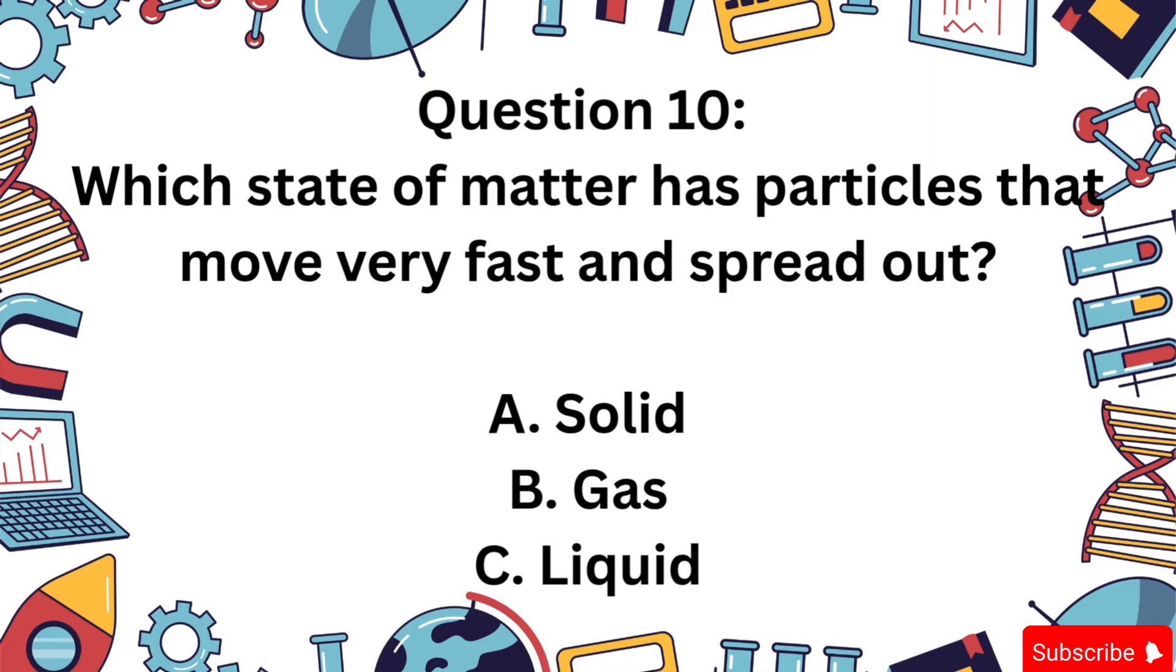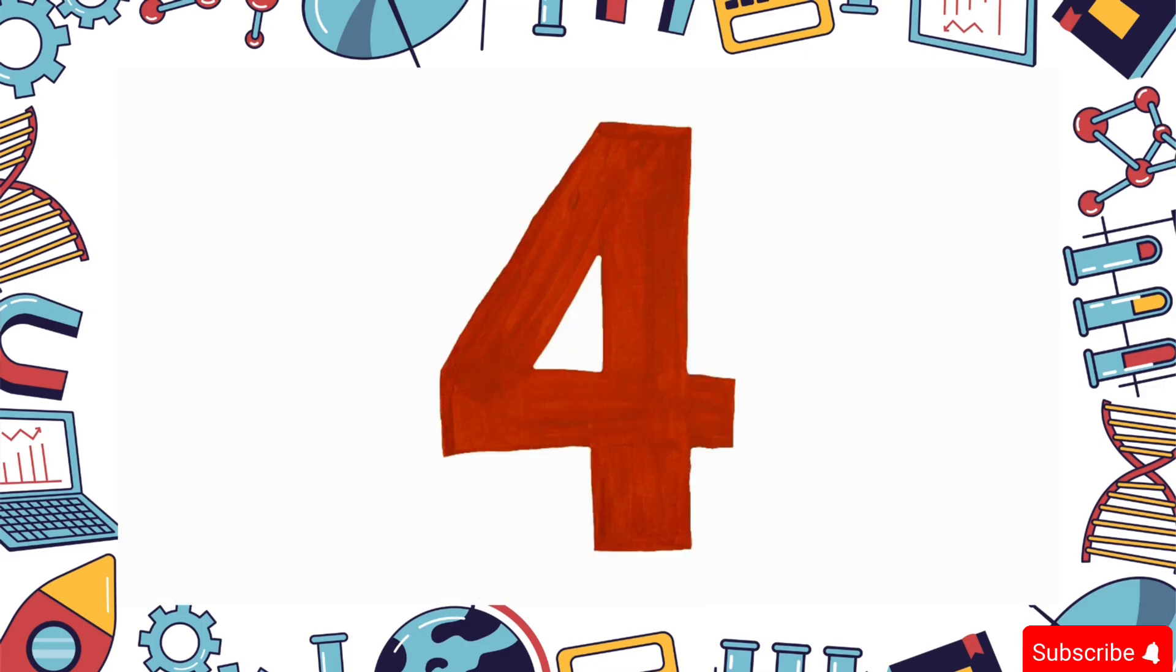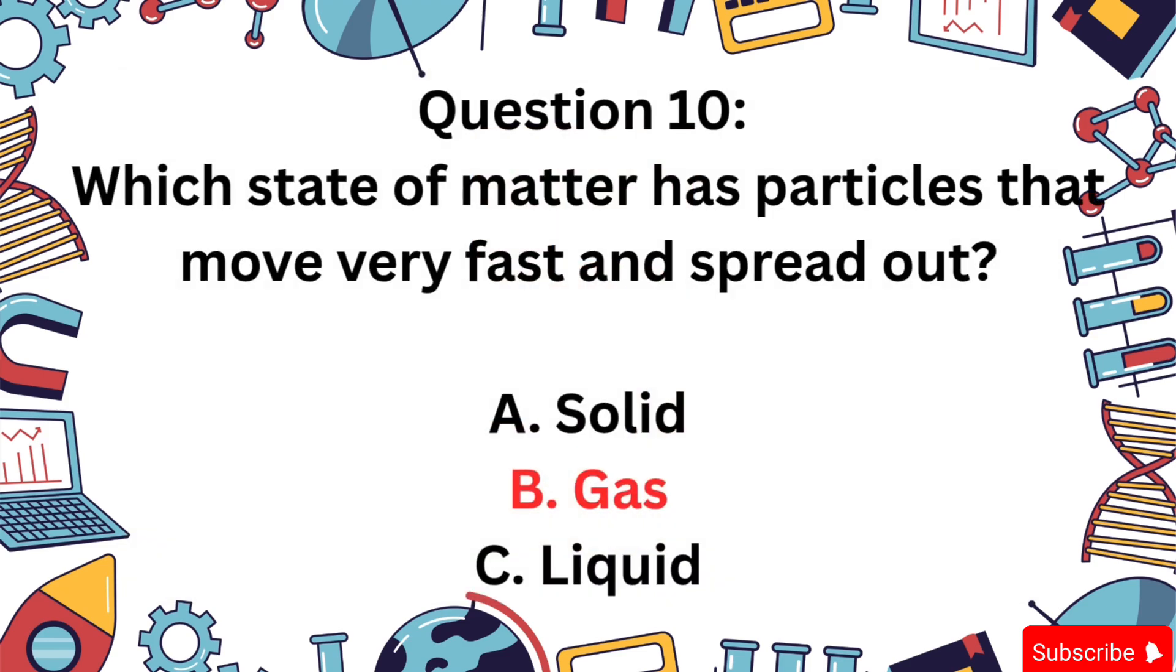Question 10: Which state of matter has particles that move very fast and spread out? Is it A) Solid, B) Gas, or C) Liquid? The correct answer is B. Gas particles move quickly in all directions and don't stick close together.